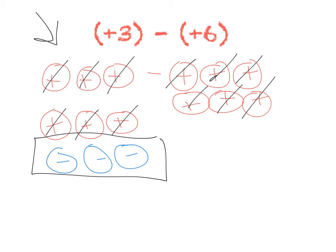What I do have remaining are three blue counters, which means that's all that's left over once I did the subtraction, which means my actual answer is going to be negative three. I have negative three counters because I have three blue counters left over.